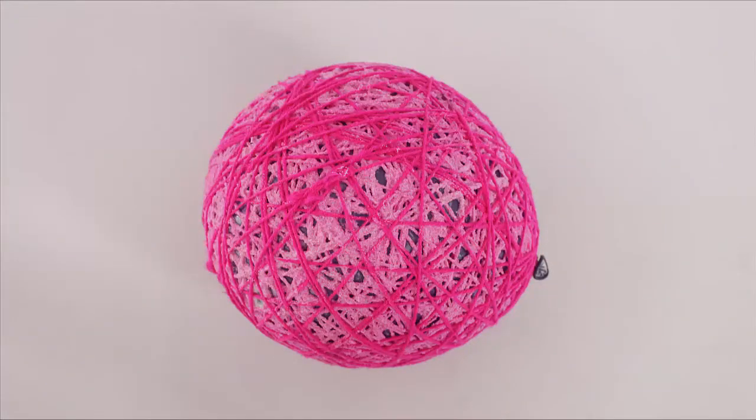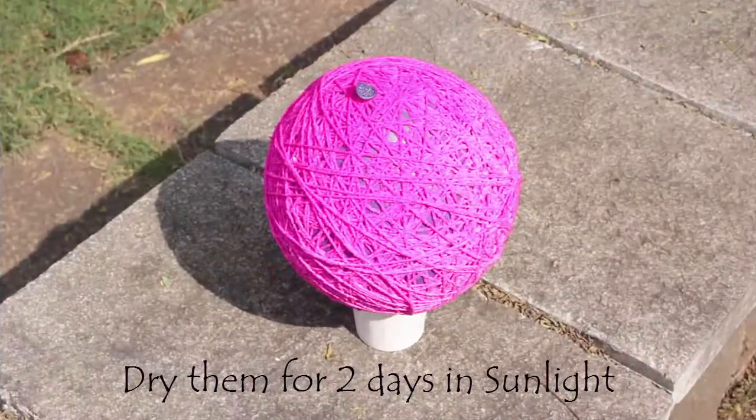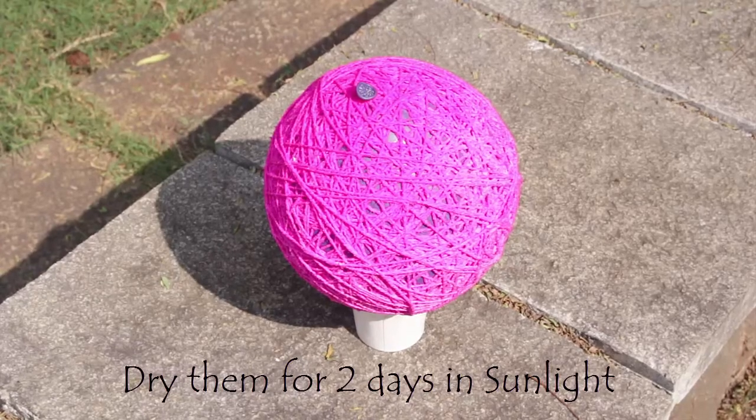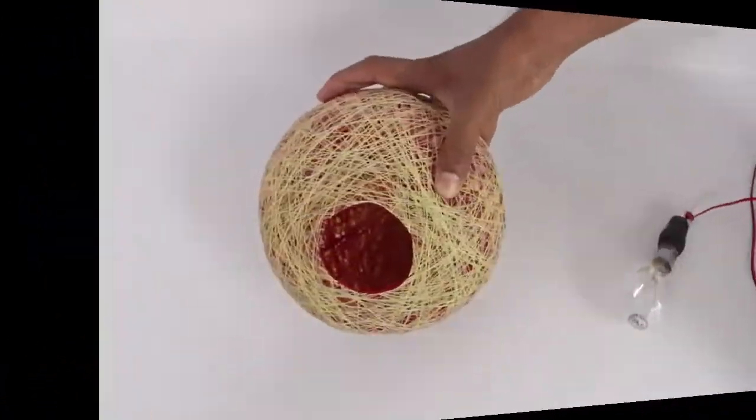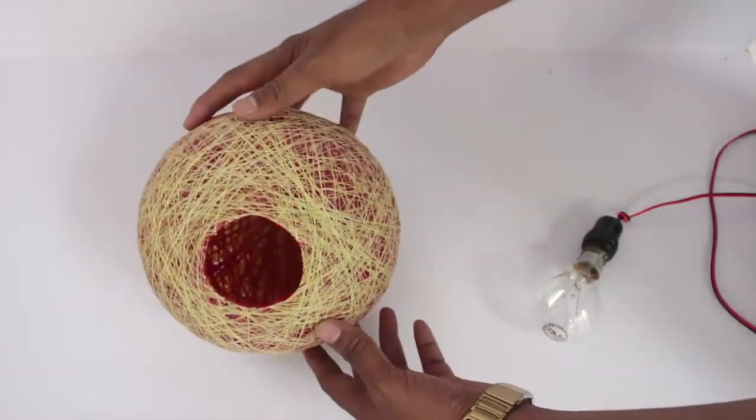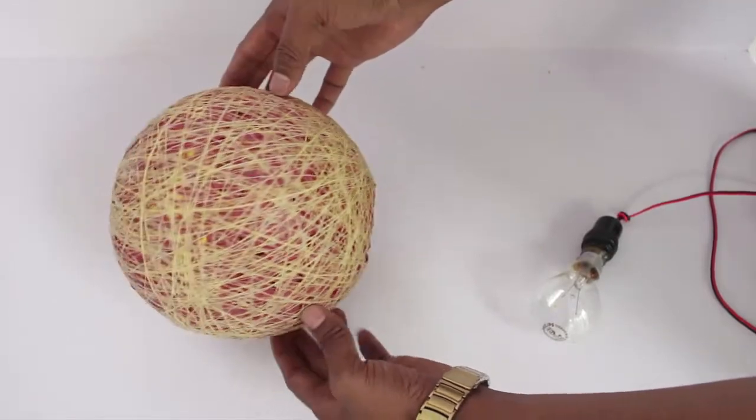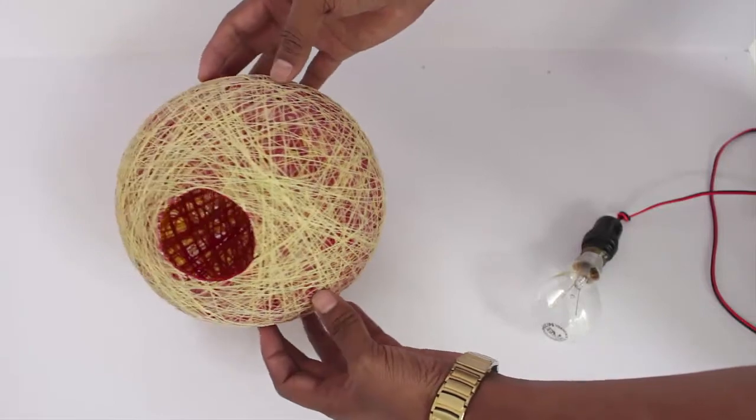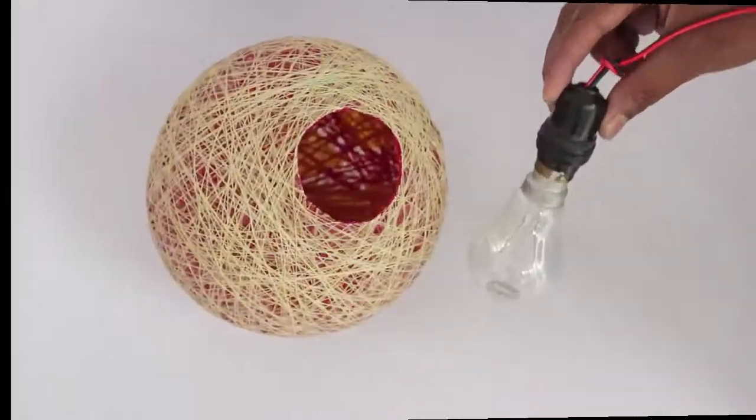Now place the balloon on a cup outdoors in the sunlight to dry for two full days. Then puncture and remove the balloon. You will be left with a very nice shell of thread or wool which will be held together by glue.